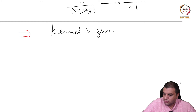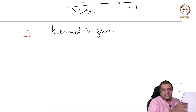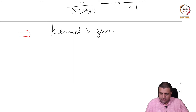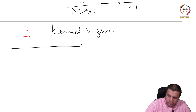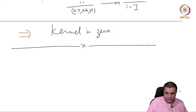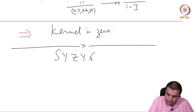So, comparing Hilbert functions is a way to identify the initial ideal once we have already constructed a candidate. Now I want to introduce a new topic — syzygies — which will be the subject of the next few lectures.